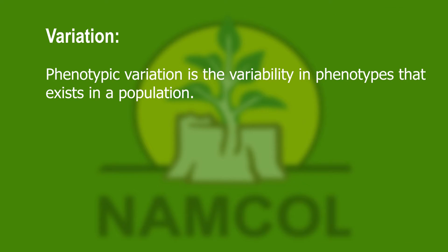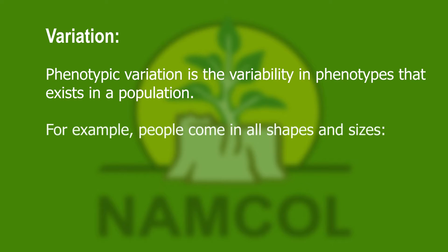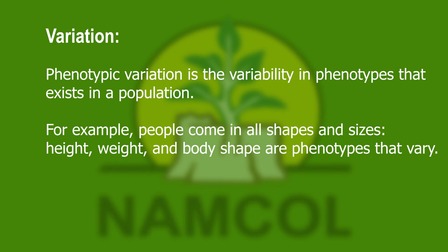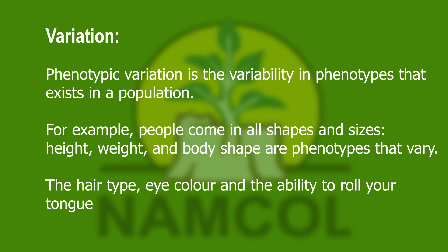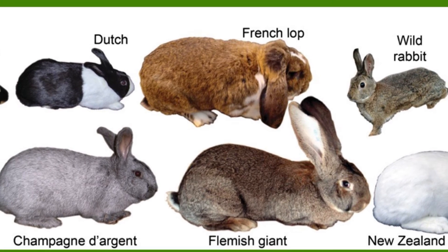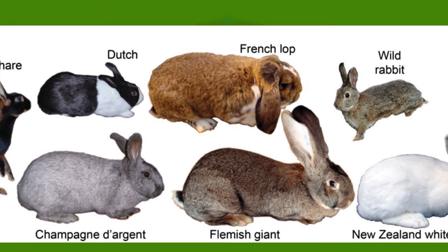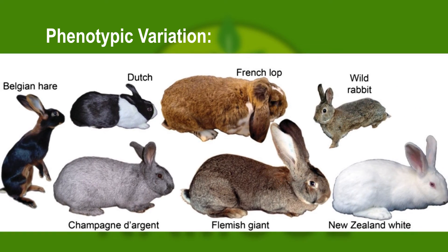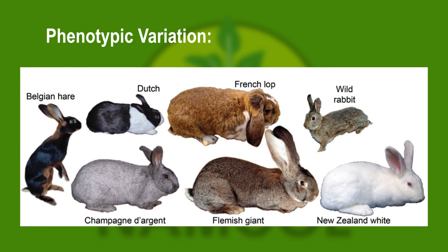Phenotypic variation is the variability in phenotypes that exist in a population. For example, people come in all shapes and sizes. Height, weight, and body shape are phenotypes that vary. Hair type, eye color, and the ability to roll your tongue or not are also variable phenotypes. Look at all the rabbits shown in this graphic — they have different appearances in terms of coat color, ear shape, and height. Phenotypic variation thus refers to the variation that we can see and observe between organisms in a population.